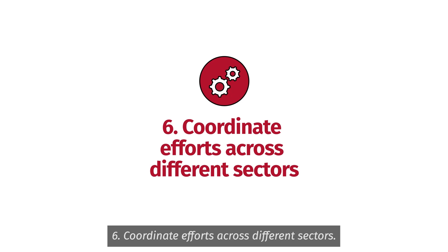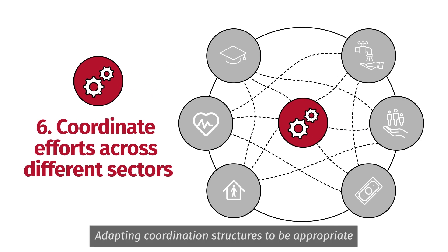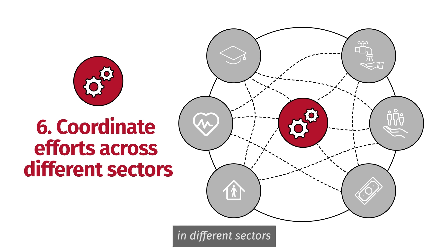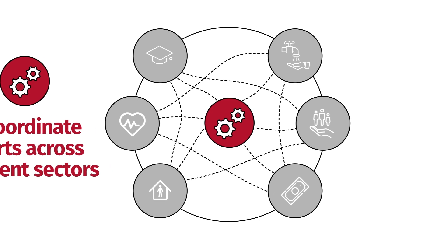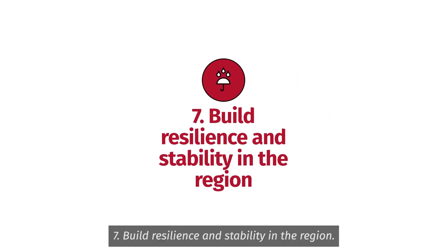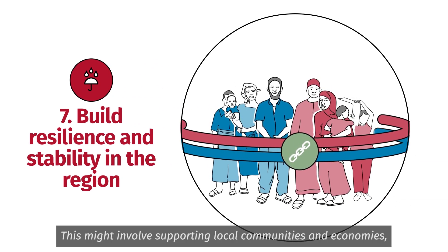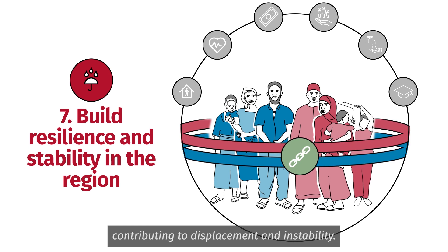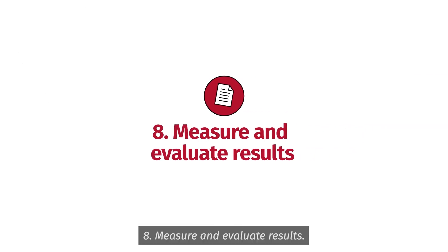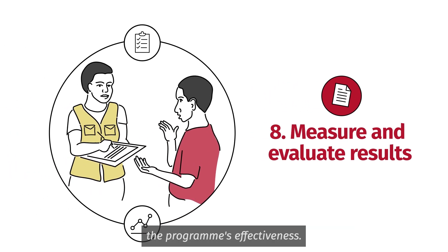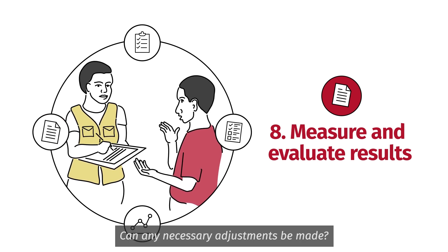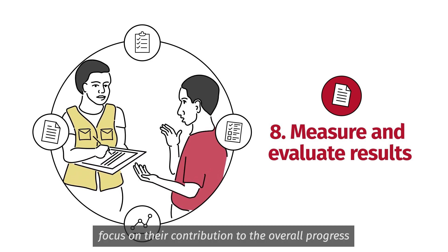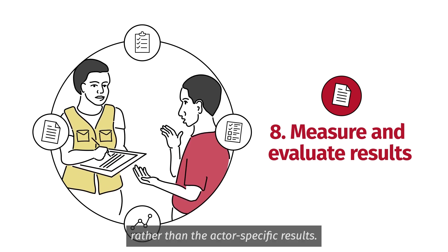Tip six: coordinate efforts across different sectors. Adapting coordination structures to be appropriate for locally-led area-based approaches is essential to avoid duplication of effort among actors in different sectors and ensure a comprehensive and integrated approach. Tip seven: build resilience and stability in the region. This might involve supporting local communities and economies, as well as addressing any underlying social, economic, or political factors contributing to displacement and instability. Tip eight: measure and evaluate results. Implement mechanisms to measure and evaluate the program's effectiveness — is it meeting the objectives, and can any necessary adjustments be made? Do this collectively and inclusively, helping all actors focus on their contribution to overall progress rather than actor-specific results.